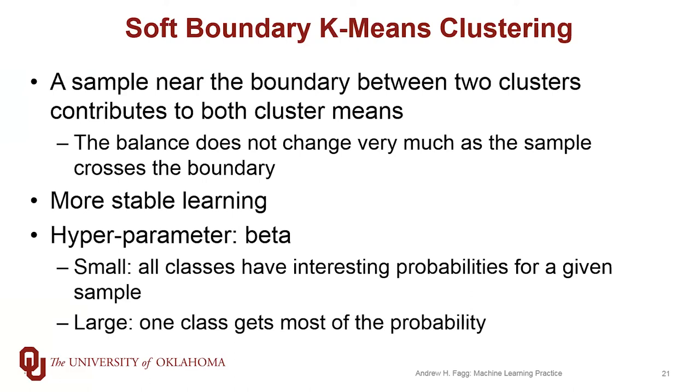One of the consequences is that we've introduced a new hyperparameter, and this is that beta term. When beta is very small, no matter where a sample is in the feature space, all of the classes get some interesting probability assigned to them. You end up with a very smooth probability assignment. As that beta term gets larger and larger, we tend to concentrate that probability onto one or a very small number of classes. Sometimes you'll see in the documentation that beta is being referred to as a sharpness parameter.